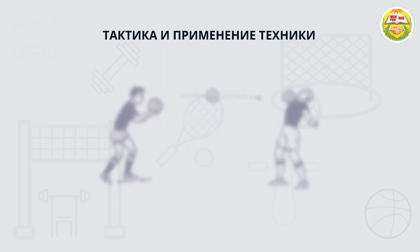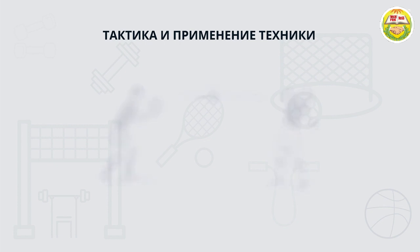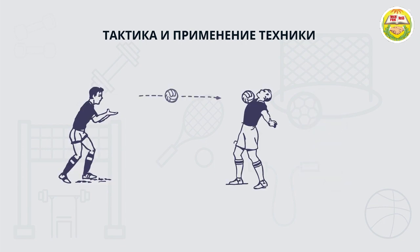Следующая тактическая ситуация — когда партнер бросает мяч параллельно земле с расстояния 7-8 метров. Игрок остается стоять на месте и останавливает мяч грудью. Эта ситуация может быть вариативной, если мяч принимается после разбега.